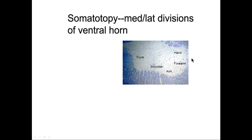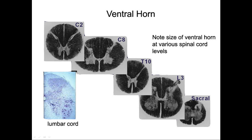A word on somatotopy or the distribution of alpha motor neurons. Alpha motor neurons that control distal musculature are located laterally in the ventral horn. Out laterally, you have alpha motor neurons controlling the hand, forearm, arm, and shoulder. Most medially, neurons control the trunk. Corticospinal tract axons come down and synapse on these different cells — the more medial, the more proximal the musculature. At the cervical and lumbar levels, there is a lot of white matter and a large ventral horn, because those levels serve the arms and legs via the brachial and lumbosacral plexuses.